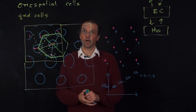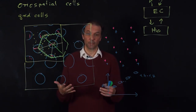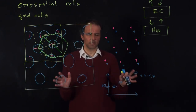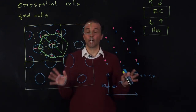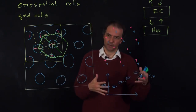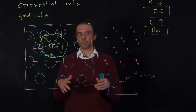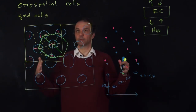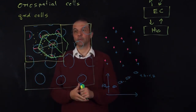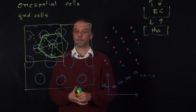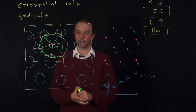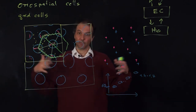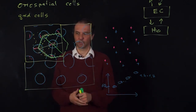The idea is that the grid cell representation is based on path integration — the rat knows how it moves and can establish this grid representation from that. But path integration generally has a drift: if you close your eyes and walk around, for a few meters you still know where you are, but then you get more and more uncertain. Occasionally you'd like to open your eyes to reassure yourself. Visual input helps realign the whole representation and keep it coherent.